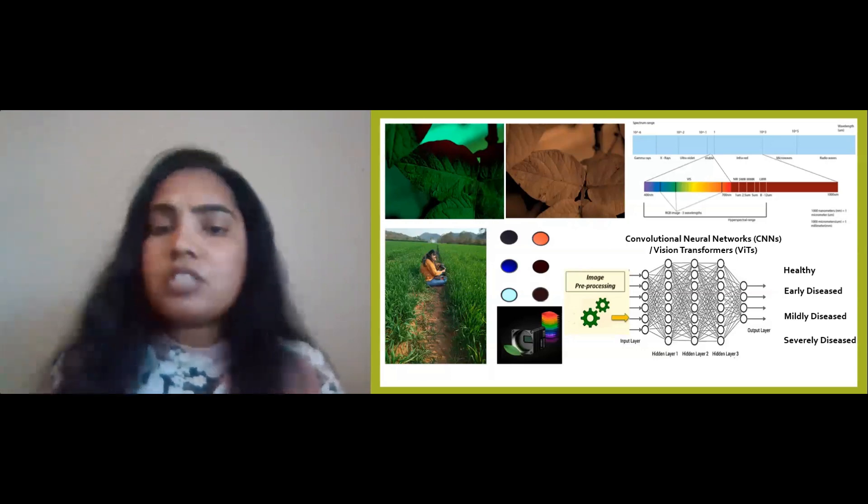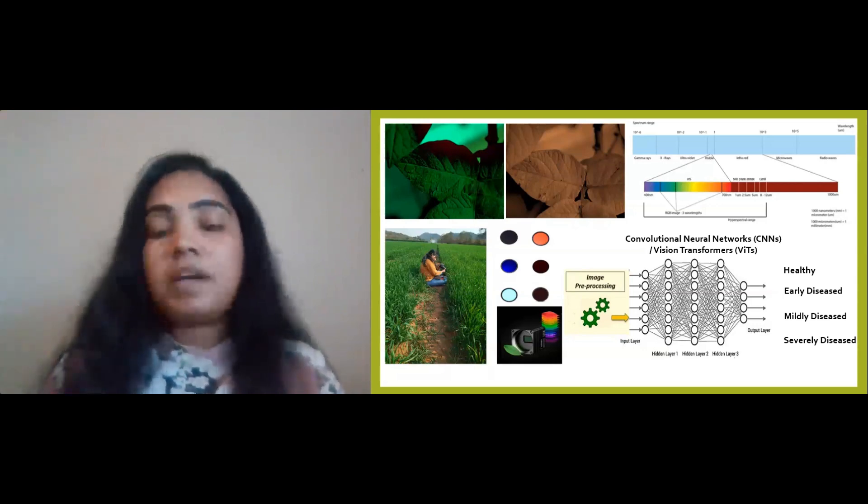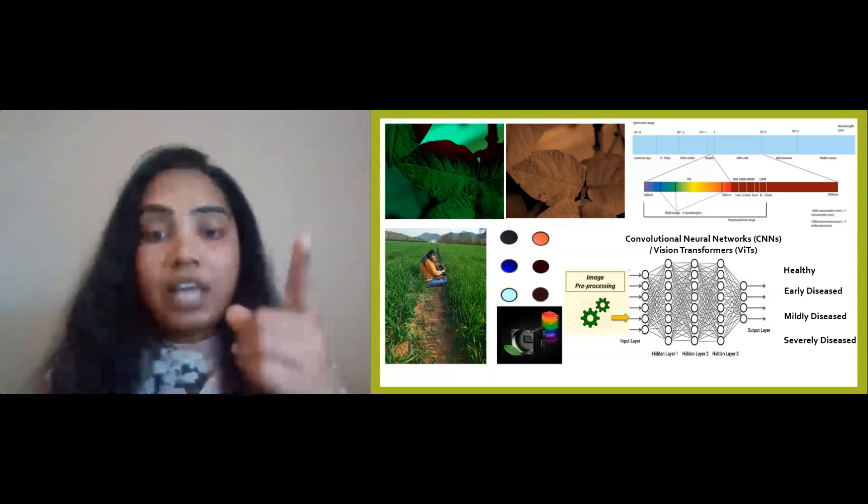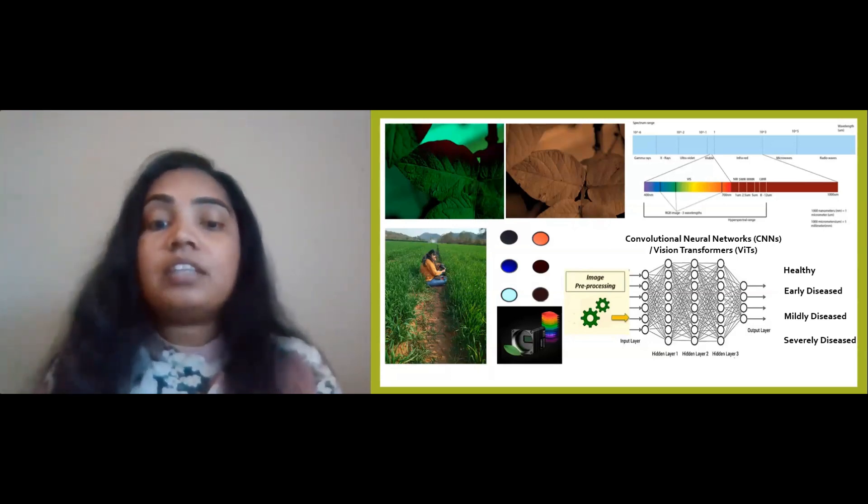You may wonder why we are using multispectral images. The reason is RGB images can only capture the visible range of the electromagnetic spectrum, similar to our eyes. The visible spectrum is ineffective in detecting early diseases. For example, if you look at the RGB image of a leaf, at a glance you may not detect any anomaly. But if you look at the same leaf using an infrared image, you can see some diseases are initiating at their early stage.